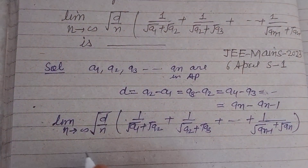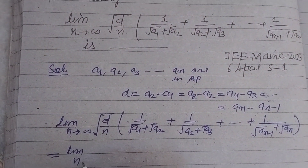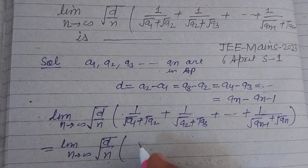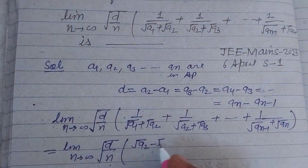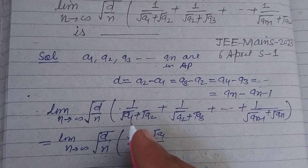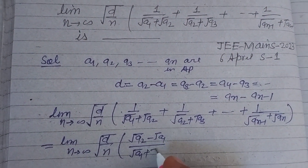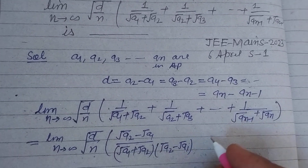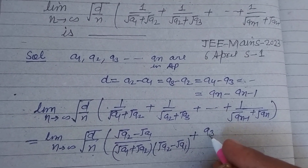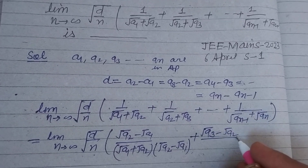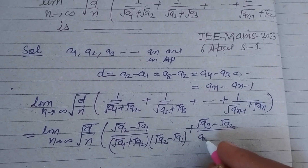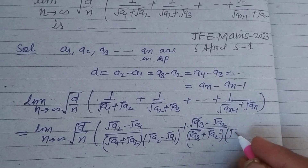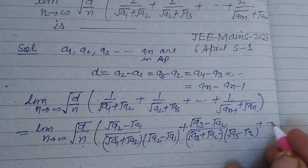Now recognizing the denominator: limit n tends to infinity of root d upon n. Multiplying each term by its conjugate — for the first term the conjugate is (root A2 minus root A1) — so the numerator becomes (root A2 minus root A1), and similarly (root A3 minus root A2) for the next term, with denominator (A3 minus A2), and so on.